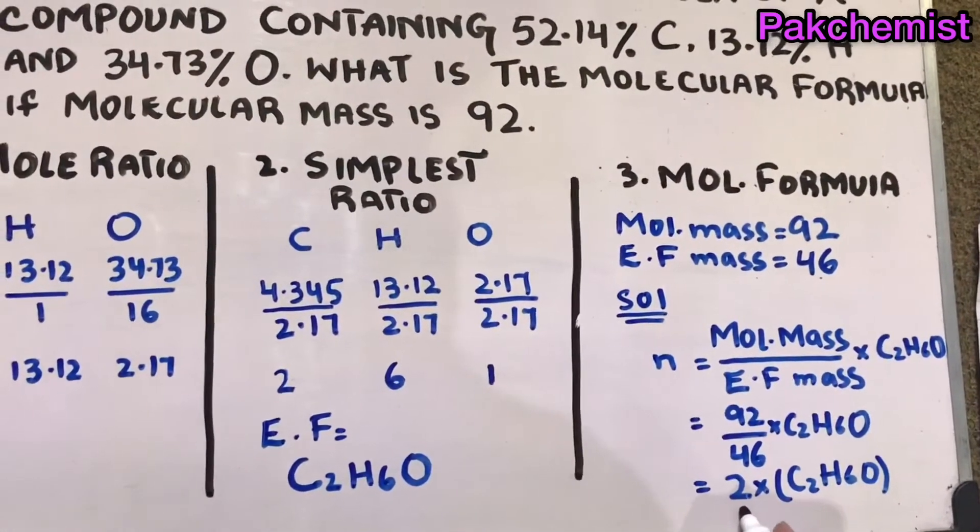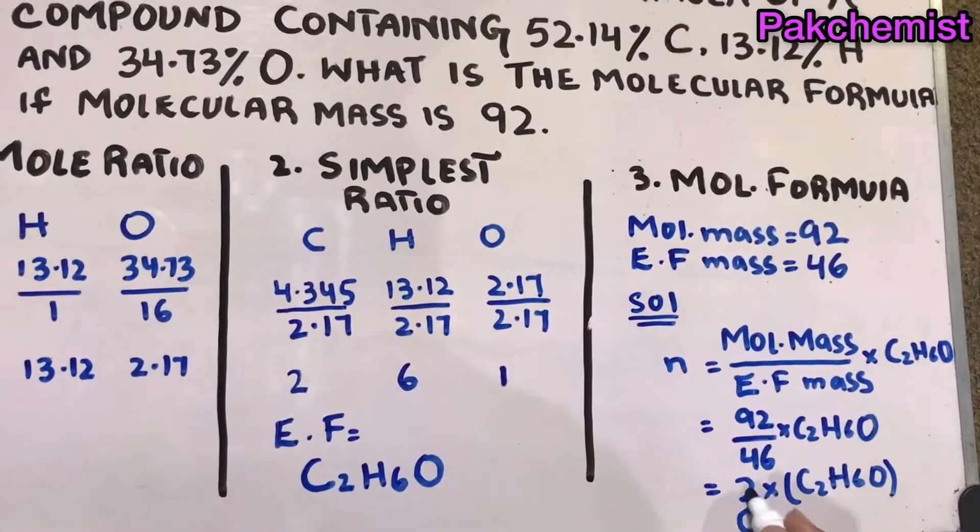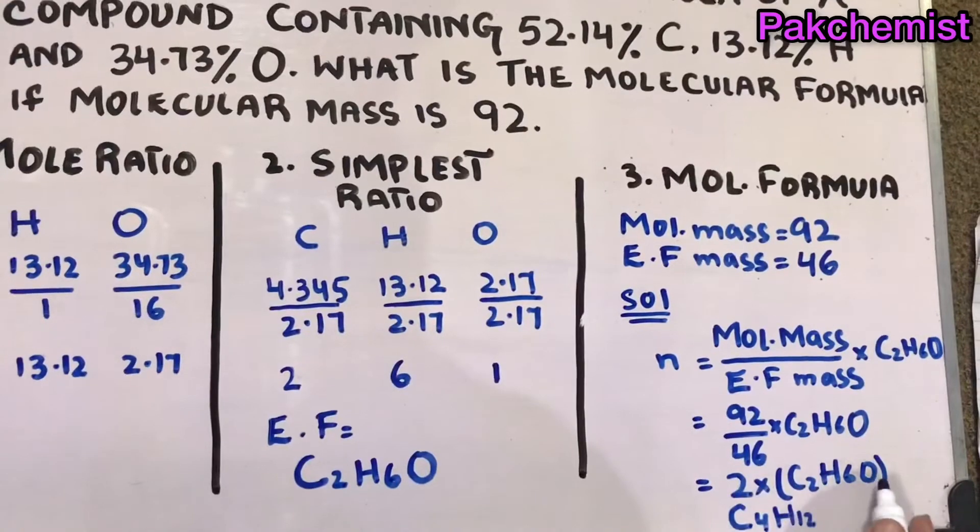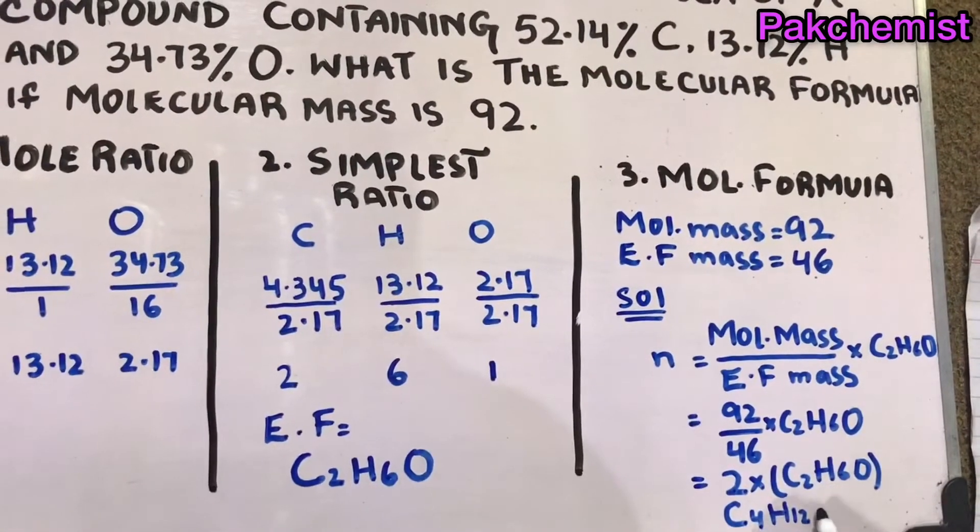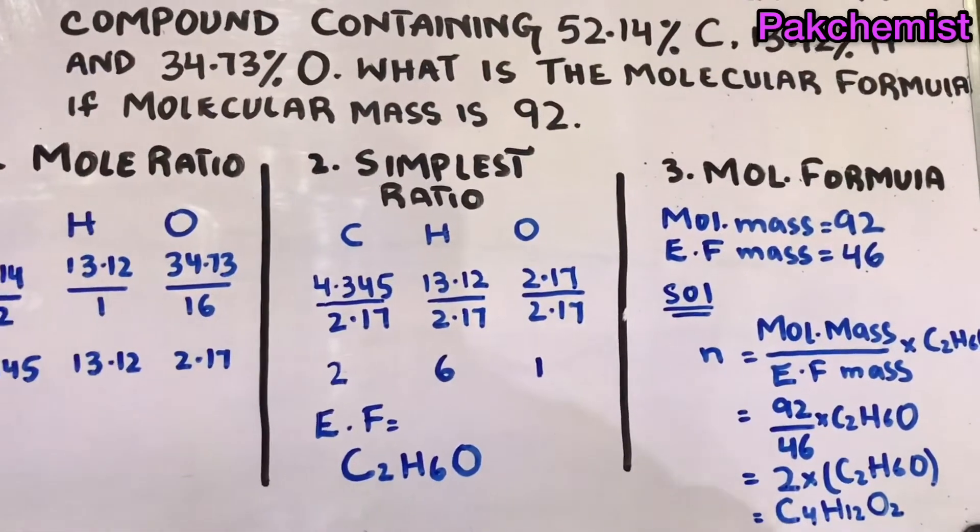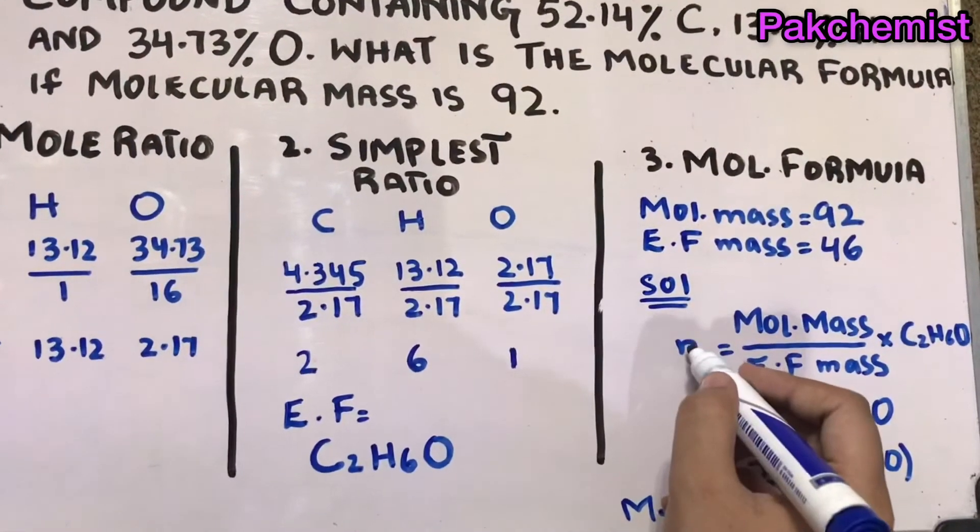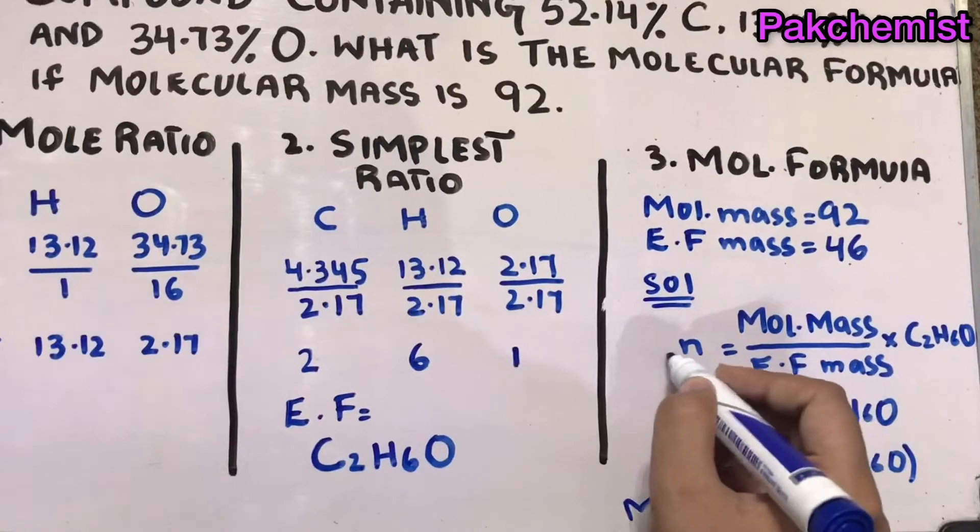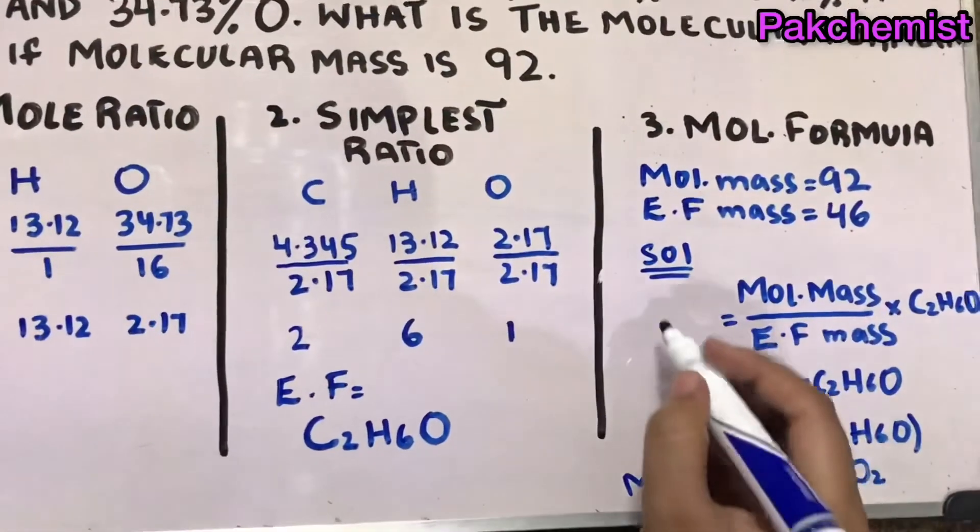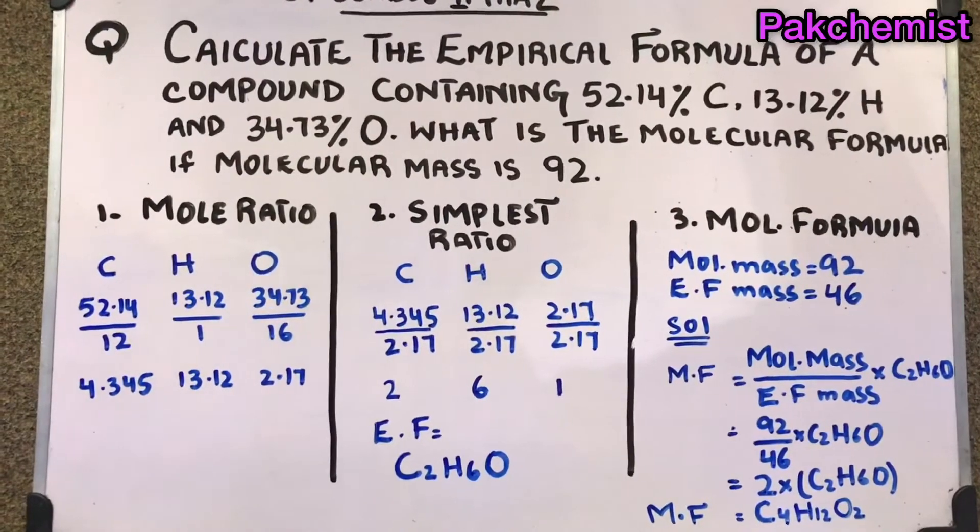Then you will get C - 2 multiply 2 equals 4, 2 multiply 6 is 12, so H will be 12, and 2 multiply 1 is 2. This is your molecular formula - so we have C4H12O2 molecular formula for this question.